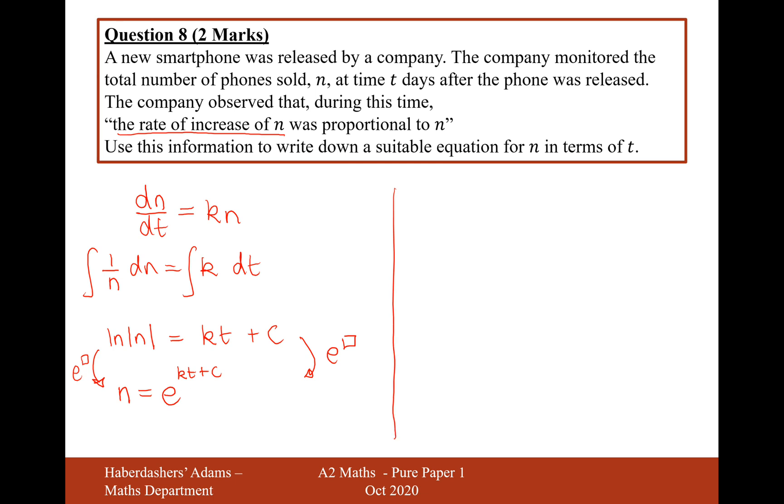Now I'm just going to simplify this a little bit, splitting up these indices here. n = e^(kt) × e^c. And now what I'm going to do is I'm just going to rewrite e^c as A.